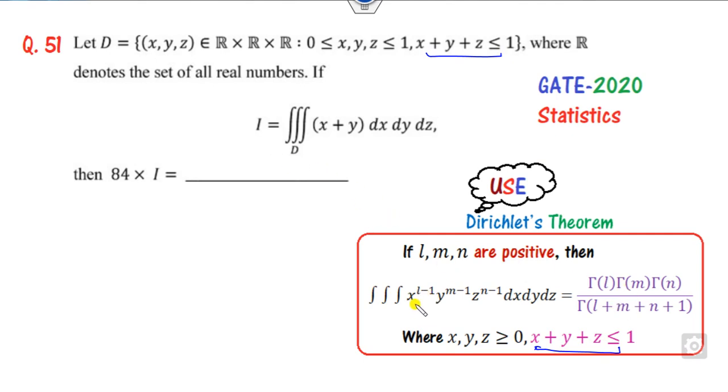Now here you can see this is the product of them. But here is a sum. How can you convert this sum into product form so that you can apply this?